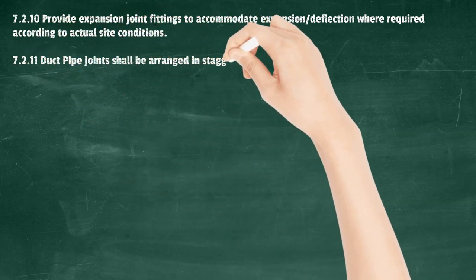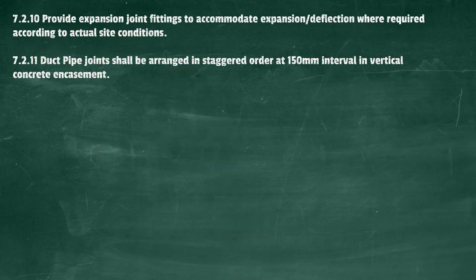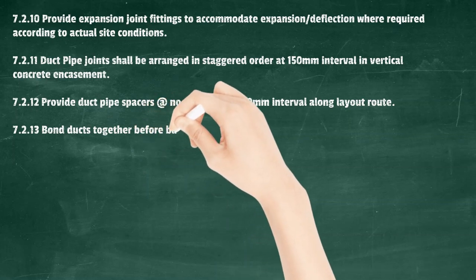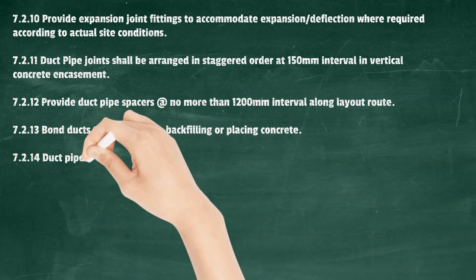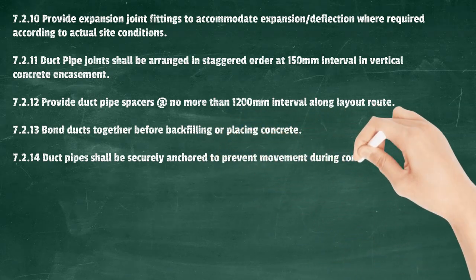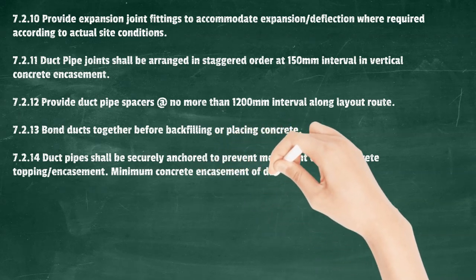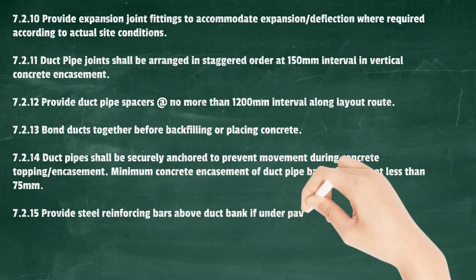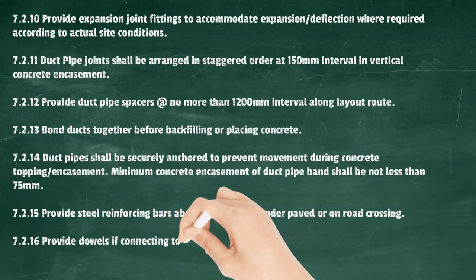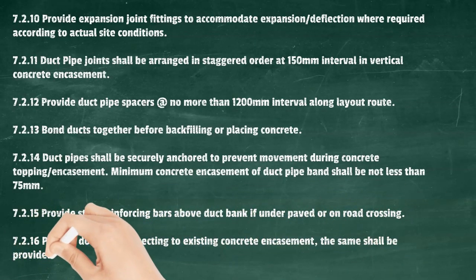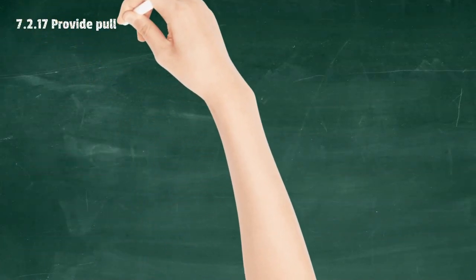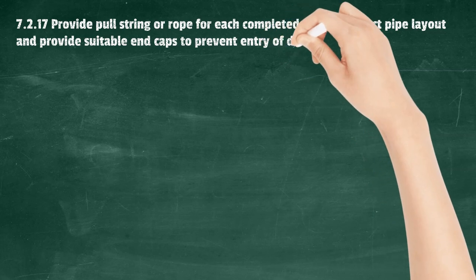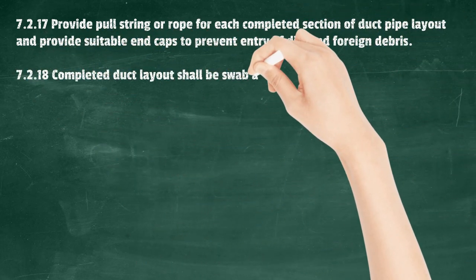Provide expansion joint fittings to accommodate expansion/deflection where required. Duct pipe joints shall be arranged in staggered order at 150 mm intervals in vertical concrete encasement. Provide duct pipe spacers at no more than 1200 mm intervals along the layout route. Band ducts together before backfilling or placing concrete. Duct pipes shall be securely anchored to prevent movement during concrete topping/encasement. Minimum concrete encasement of duct pipe band shall be not less than 75 mm. Provide steel reinforcing bars above duct bank if under paved area or road crossing. Provide dowels if connecting to existing concrete encasement or to the wall of a manhole. Provide pull string or rope for each completed section of duct pipe layout and provide suitable end caps to prevent entry of dirt and foreign debris. Completed duct layout shall be swab and mandrel tested to ensure smooth cable pulling.